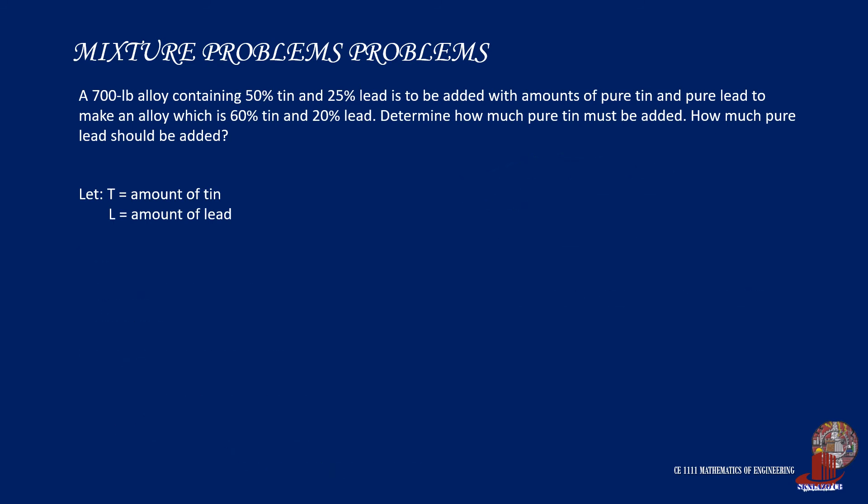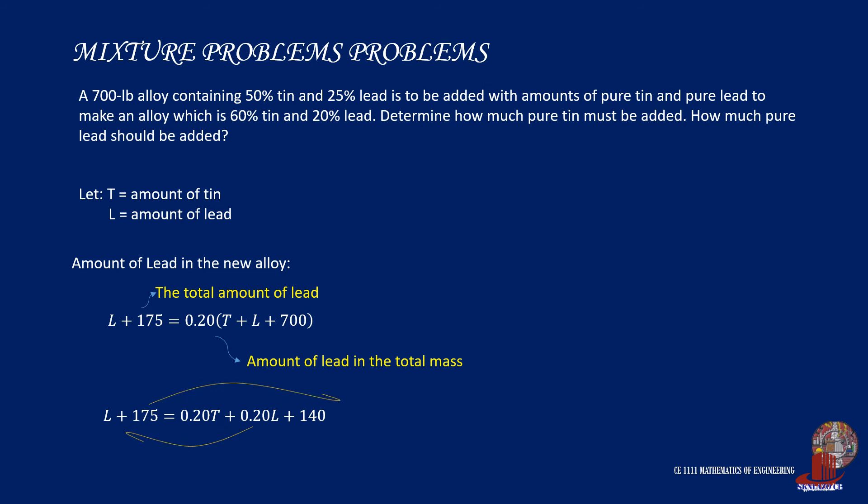Let's do the same process using lead. The amount of lead in the new alloy is 20%, thus the translation would be such. Expanding the equation, we get L plus 175 equals 0.2T plus 0.2L plus 140. Rearranging the terms, we get 0.8L minus 0.2T equals negative 35. Let's keep this as equation 2.